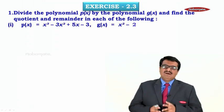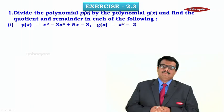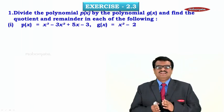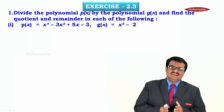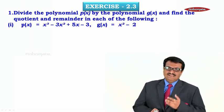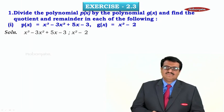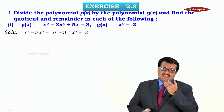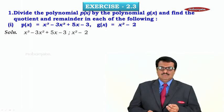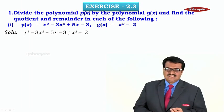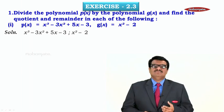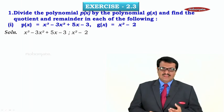Exercise: Divide the polynomial P(x) by the polynomial G(x) and find the quotient and remainder in each of the following. They have given two polynomials and we have to divide them. The first polynomial is x³ − 3x² + 5x − 3, and the second polynomial is x² − 2.